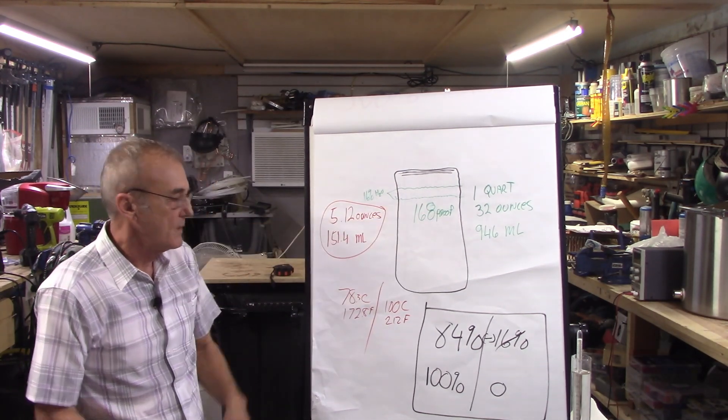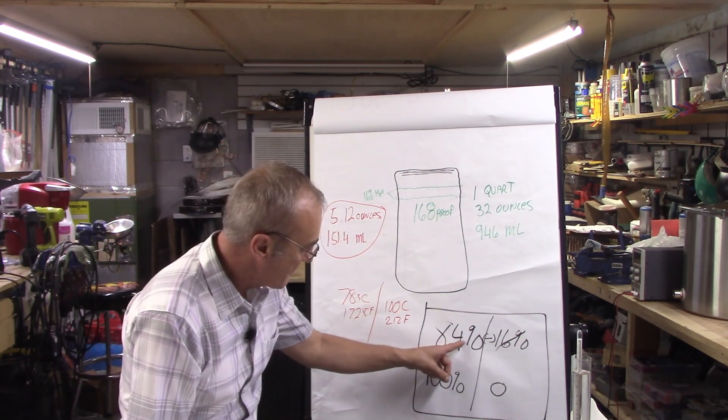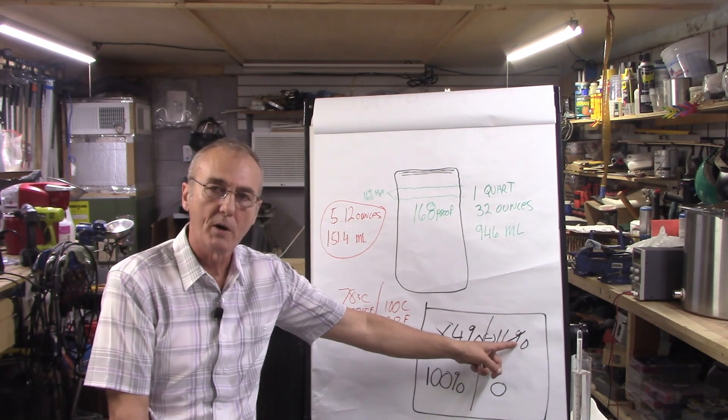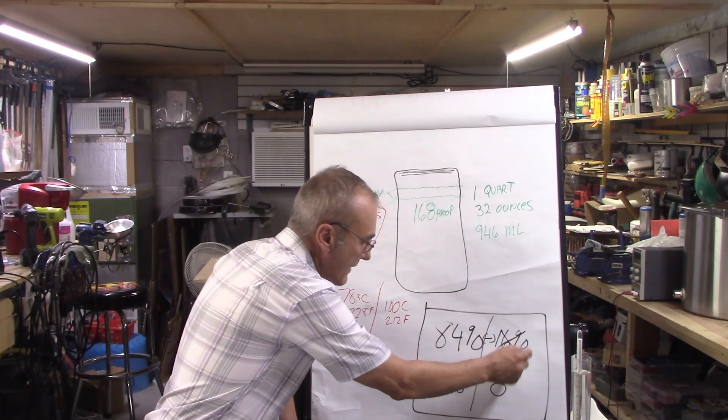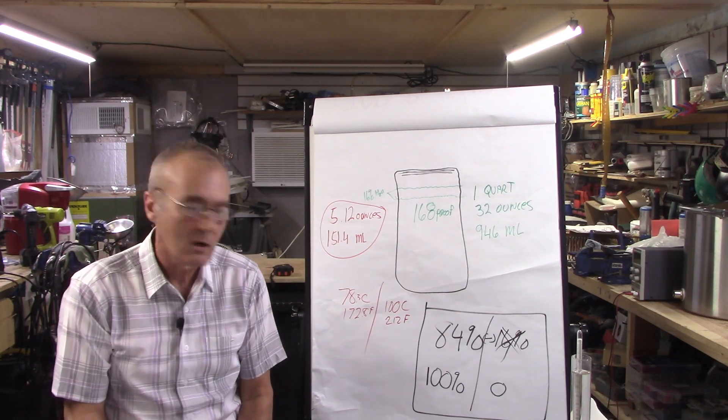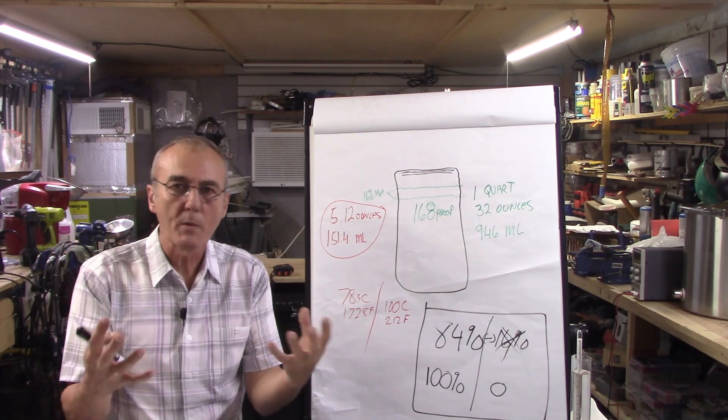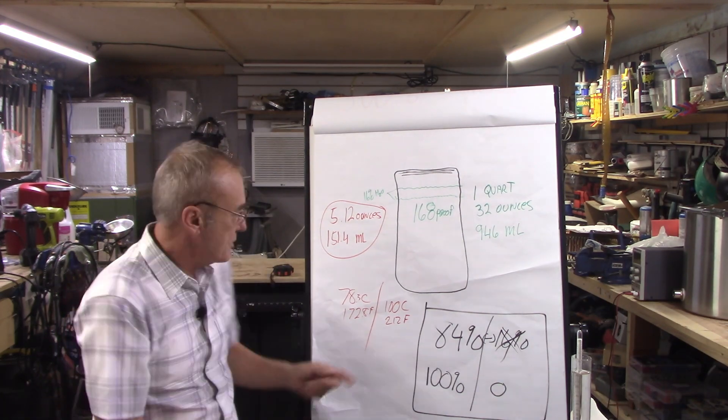Here's what we theorized in part one. We asked, well, if we have 84% alcohol and 16% water, if I could just remove that 16% of water, would I have 100 proof or 100%? Certainly you would.